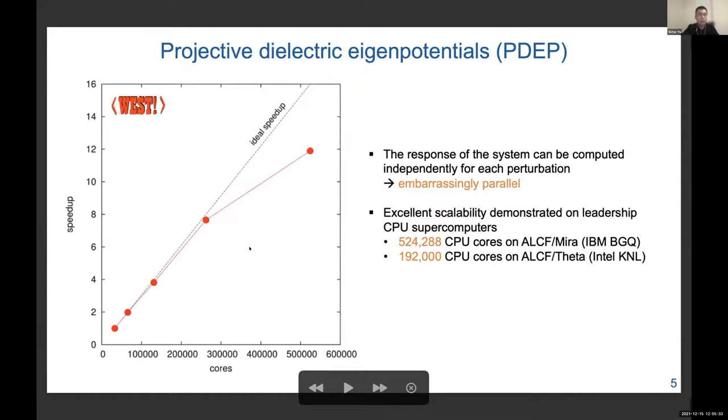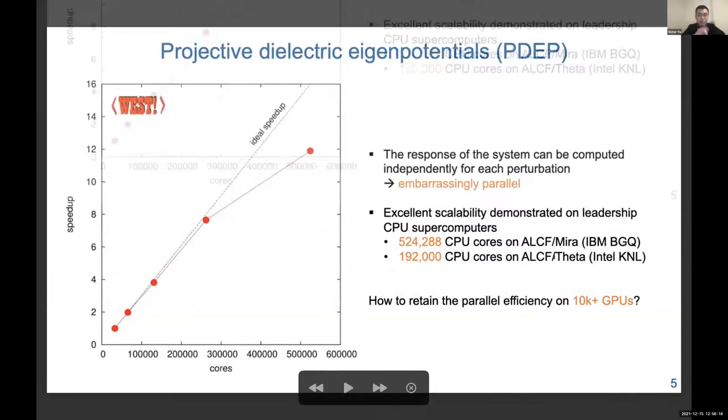This has proven to be very successful. Shown here is one benchmark on the Mira supercomputer, which is an IBM BlueGene Q machine. As you can see, the parallel efficiency of the code is very close to perfect for up to 200,000 CPU cores, and it is still decent for more CPU cores. The trick is what I just explained. The perturbations are embarrassingly parallel, so they can be distributed uniformly without any problem. A similar observation is on the Theta supercomputer, which has Intel KNL CPUs.